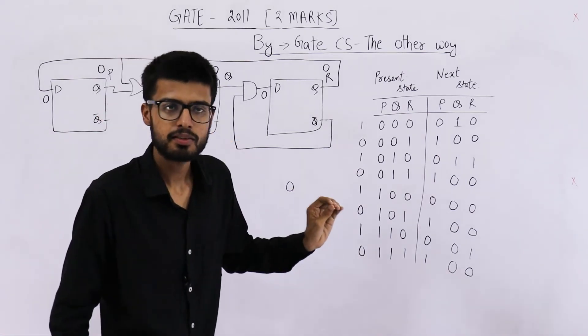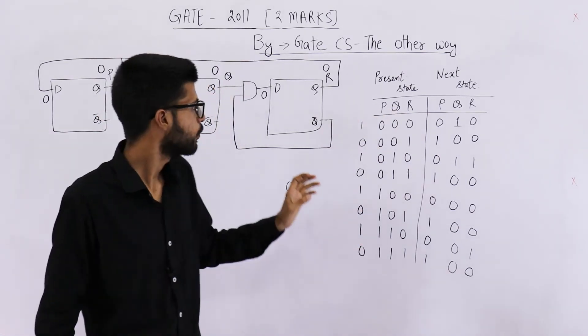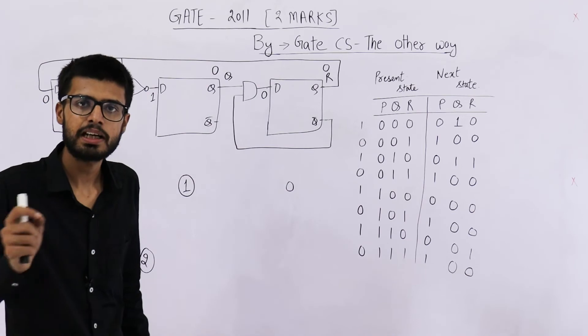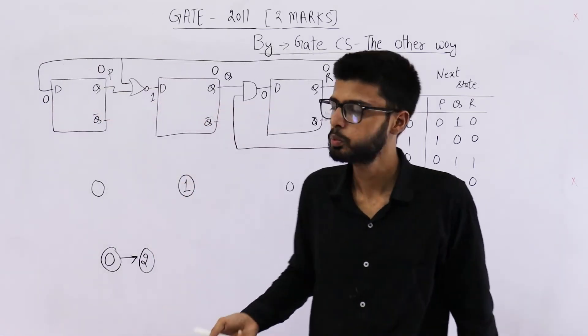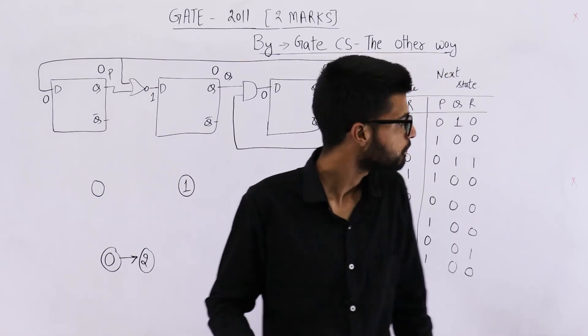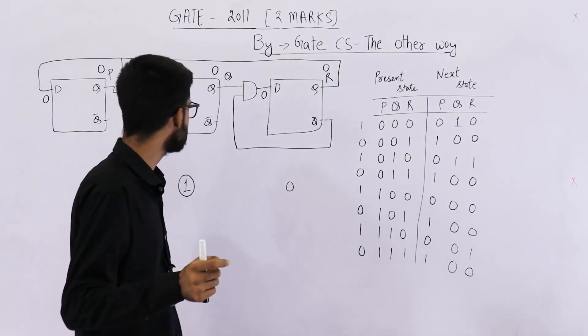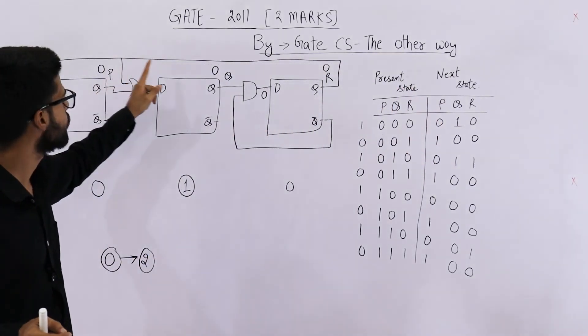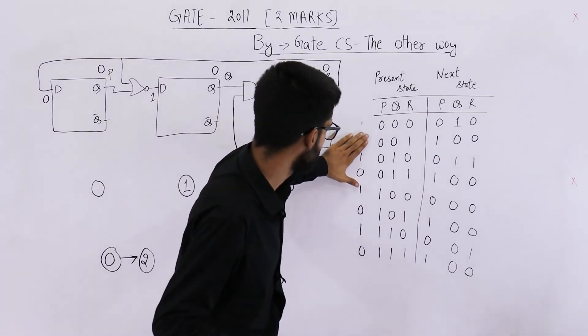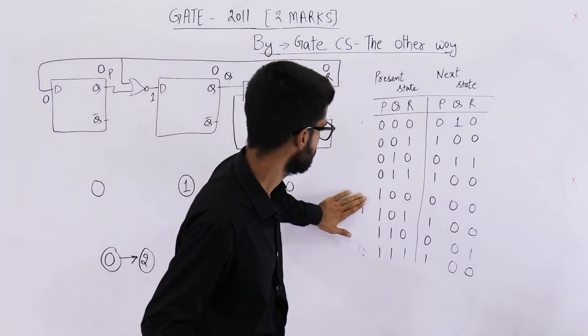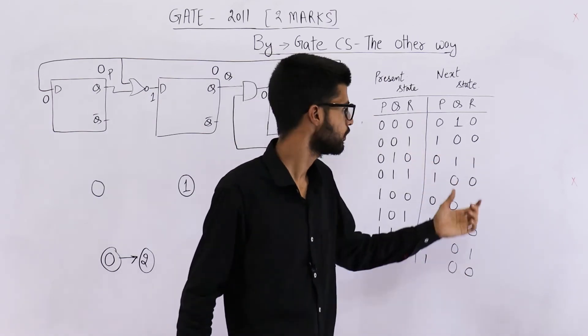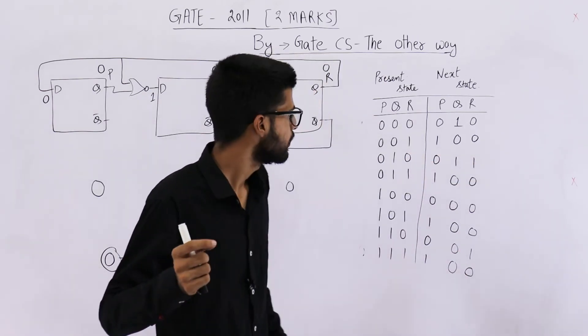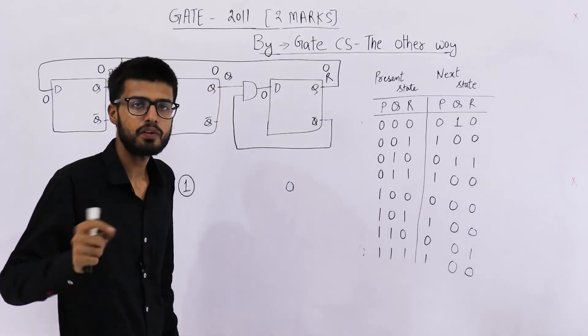So you can see, this table has been filled. You can just start this question by filling the table. Whatever I discussed earlier was actually not required, but I discussed it because I want to explain it in a more intuitive way. So part A of this question was if initial value is 0, 1, 0. Let us see where do we have 0, 1, 0. This is 0, 1, 0. So next state is 0, 1, 1. The answer to A part is 0, 1, 1.